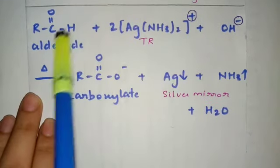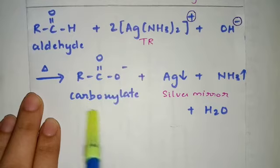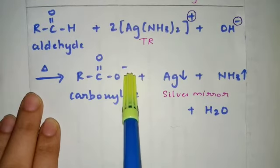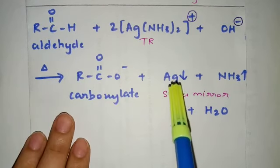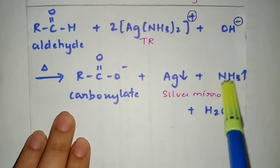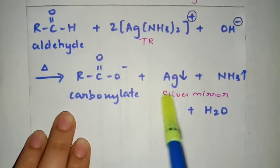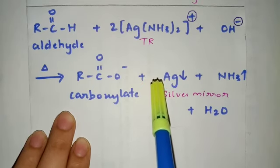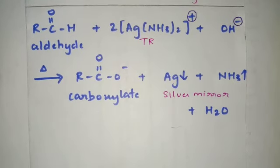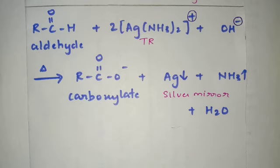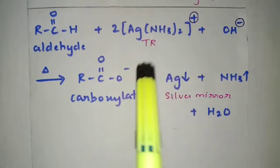From the aldehyde, we are going to get the carboxylate ion (RC=O, O⁻). Silver is precipitated, ammonia is released, and a water molecule is formed. This silver metal that is precipitated sticks on the walls of the test tube in which this reaction is happening. When you look from above into the test tube, you will find a slight mirror-like structure because of this Ag — and that is the reason it is known as the silver mirror test.